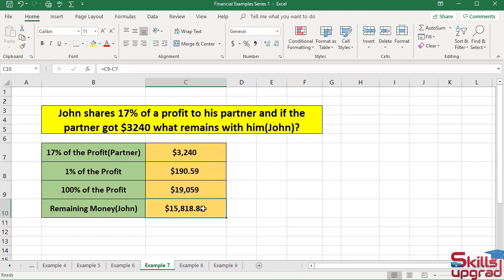Activate this cell again. Decrease the decimal places of this value to 0. In the Number group, click the Decrease Decimal button. So John has a remaining amount of $15,819 from his total profit.